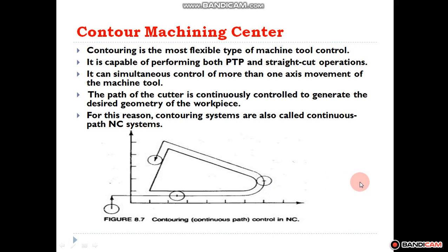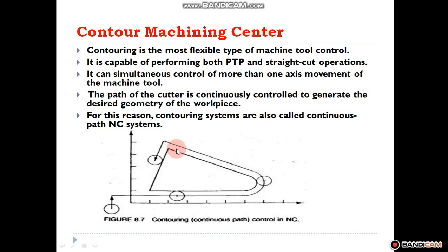The next type is the contour machining center. Contour machining centers are the most flexible type of machine tool system. They can perform both point to point control as well as straight cut operations. A major advantage is that machining can be done on more than one axis. The path of the cutter is continuously controlled to generate the desired geometry of the workpiece, which is why these are called continuous numerical control or CNC systems. As shown in the figure, the tool can provide both straight line cuts and radius cuts, allowing you to cut fillets, chamfers, and any desired profile.